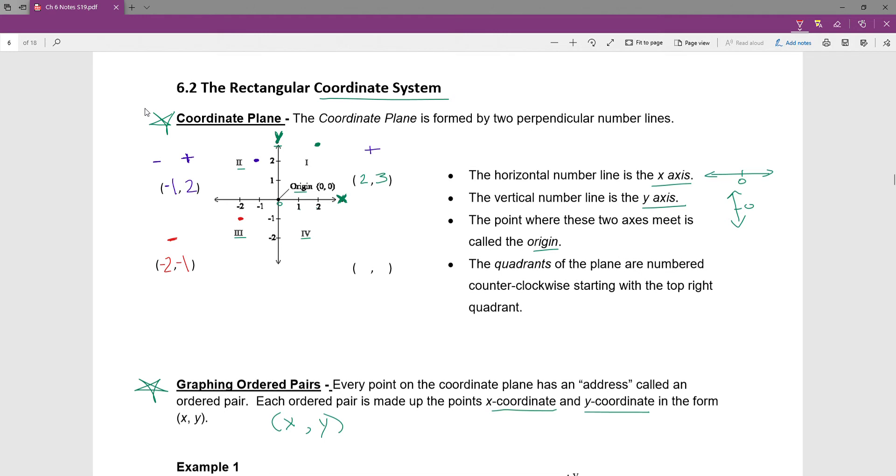In the fourth quadrant, if I did an example, and again, I'll switch colors just for fun. If I had a point, say, right here, that would be 1 on the x-axis and negative 1 on the y-axis. And again, these are always listed as x and then y. So this would be a positive x. All the ordered pairs in this quadrant would be a positive x and a negative y.